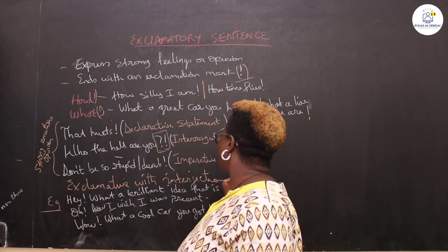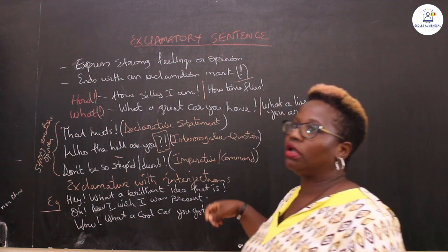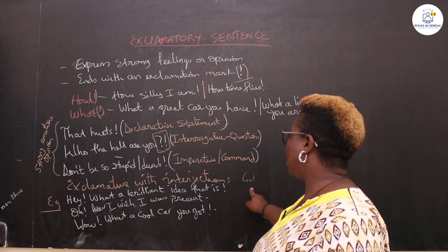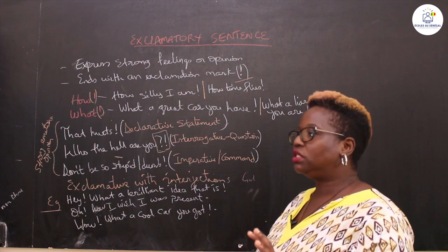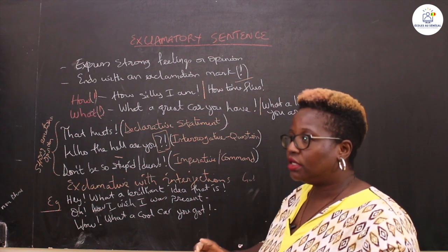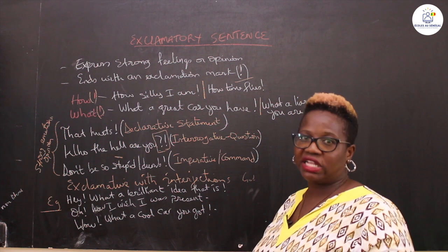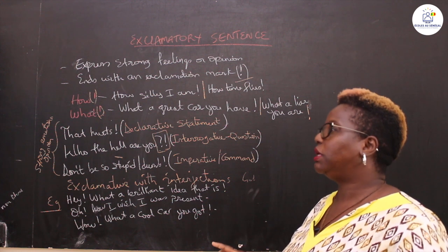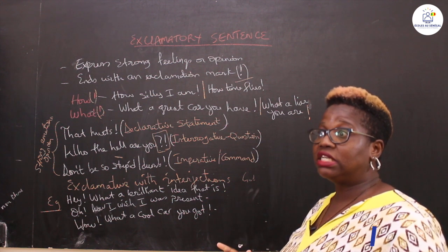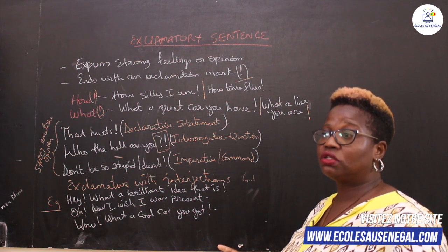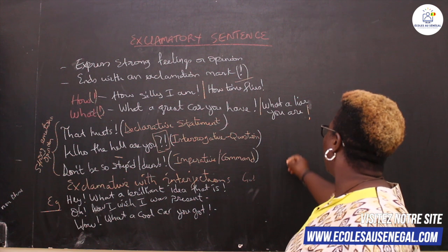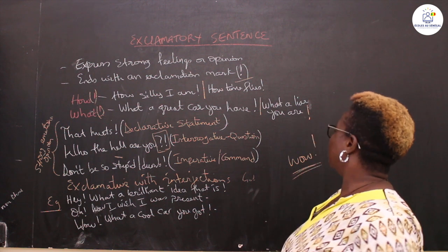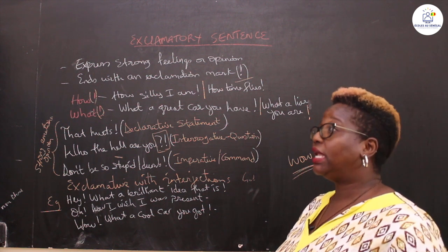There also exist exclamatory sentences with interjections. In English, interjections are words like 'God,' 'Oh my God,' 'Hey,' 'Oh,' 'Wow' — these are added to a sentence to build up the emotions. For example, you see someone stunning walk by and you say 'Wow!' — that's an interjection, and it comes with an exclamation mark.